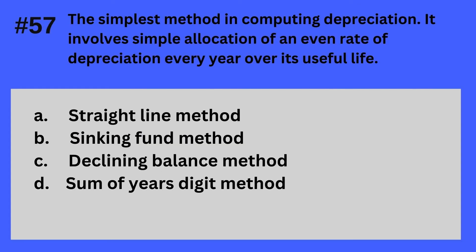Question 57. The simplest method in computing depreciation. It involves simple allocation of an even rate of depreciation every year over its useful life. A. Straight line method, B. Sinking fund method, C. Declining balance method, D. Sum of years digit method. The answer is A — Straight line method.